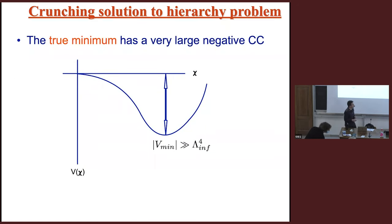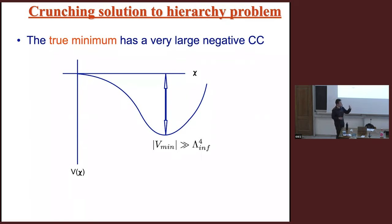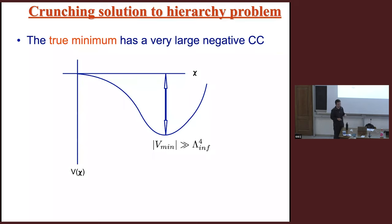A question arises: the negative vacuum energy needs to be much bigger than the inflationary energy — much less than zero relative to the inflationary scale — so that crunching happens irrespective of whether things are inflating or not. We want these regions to just crunch and die.